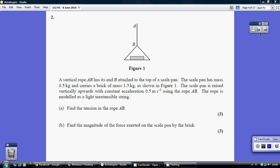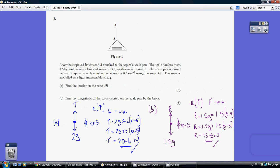Question 2. So we're being asked to find the tension in the rope AP. Here's a little diagram looking at the system as a whole. We've got a total mass of 0.5 and 1.5 which is 2 kilograms.